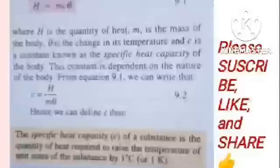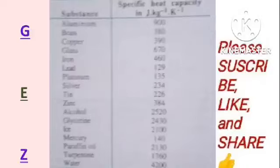Here is a table showing the specific heat capacity of different substances, from aluminium to brass to copper. Of special importance, you can see water at the bottom of the table, which is 4200 joules per kelvin per kilogram. This shows that water has the highest heat capacity of all the substances on this table.